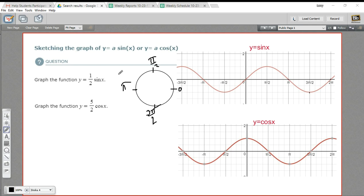So how then do we graph something like 1 half sine of x or 5 halves cosine of x? Well, I think the best way to do this is just make a chart. When you graph anything, you make a chart of the x values and the y values.